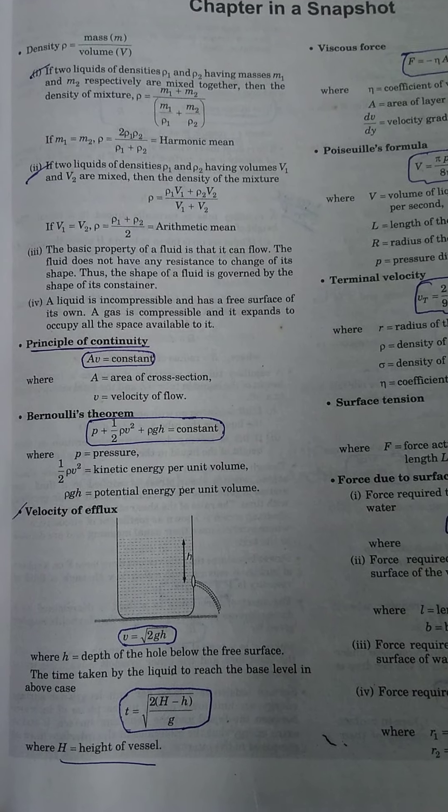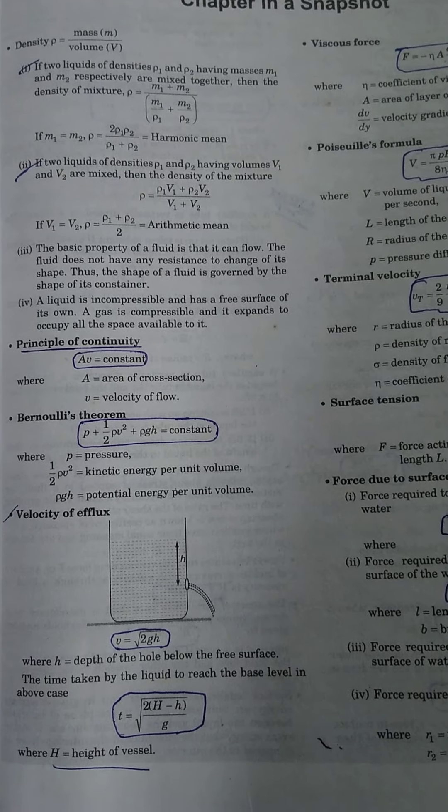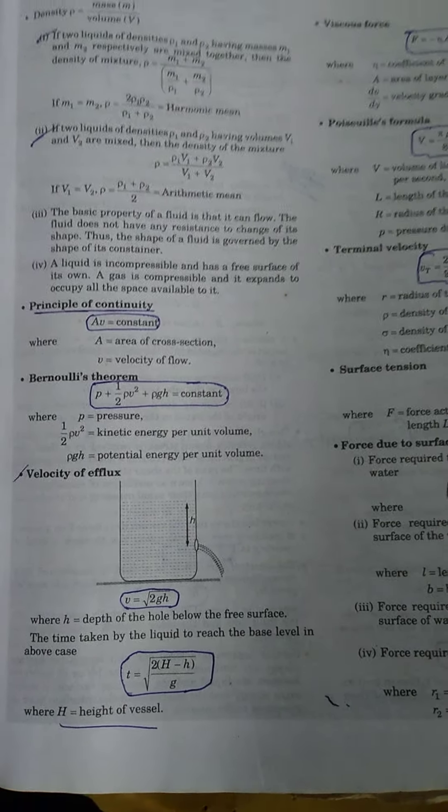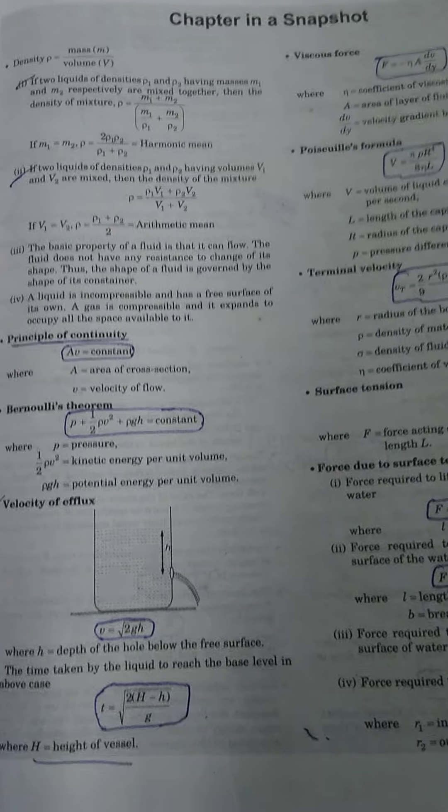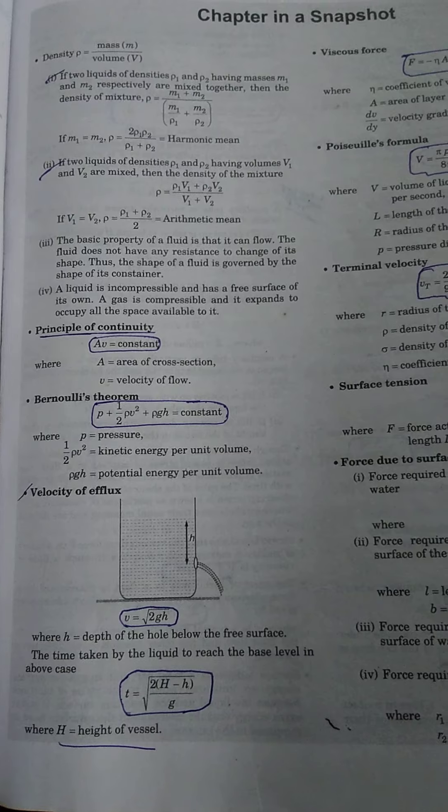Principle of continuity: Av equals constant, where A is the area of cross-section and v is the velocity of flow. Bernoulli's theorem: P plus half ρv² plus ρgh equals constant.